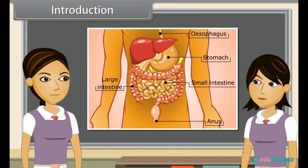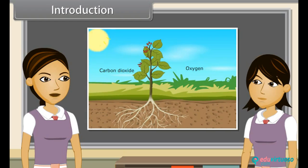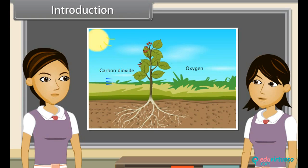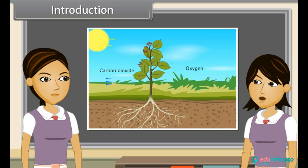We know that all organisms perform some basic functions to keep themselves alive. The basic functions performed by living organisms to maintain their life on this earth are called life processes. Since living organisms perform various functions to maintain their life, energy is required to perform these functions. They get this energy from outside the body in the form of food.